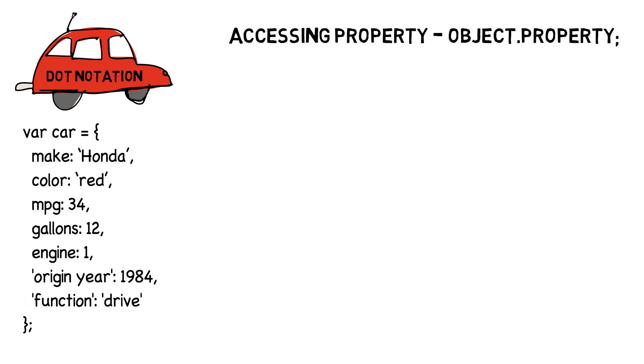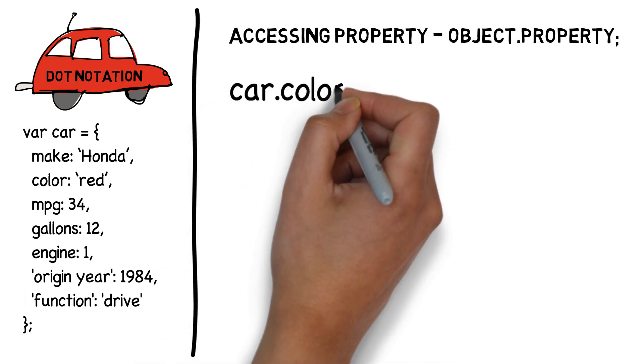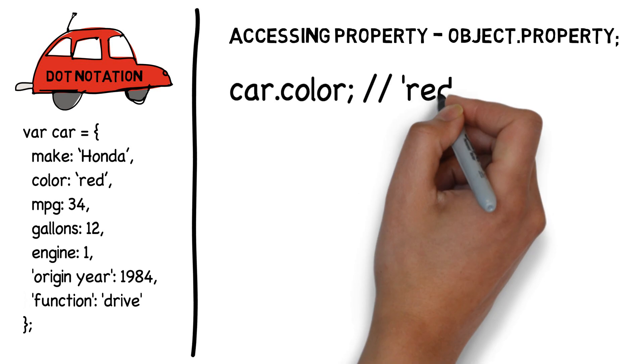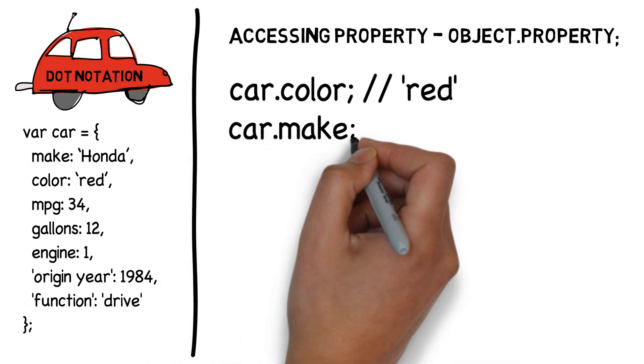So let's imagine that we want to access the color red and the make Honda of the car. We would write object car dot property color and get red. We would write object car dot property make to get Honda.